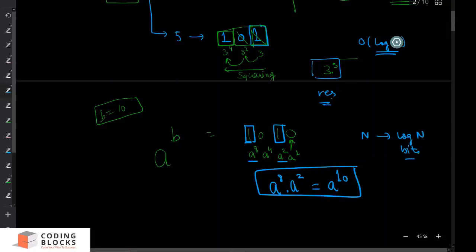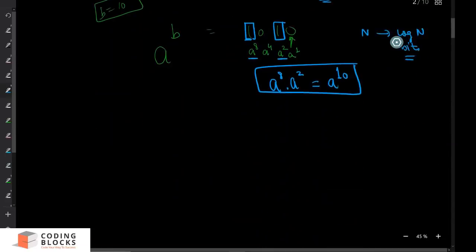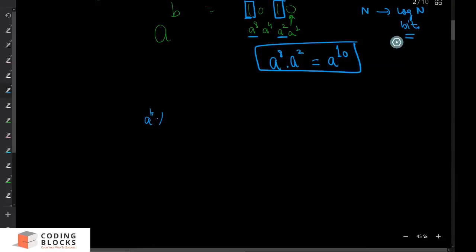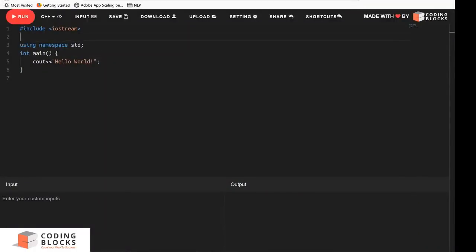What we do is iterate over b, extract bits one at a time, and if a particular bit is 1, we multiply the current value of a into our result. The result starts at 1. To compute a raised to the power b mod m, we apply stepwise mod: at every step where we update result or update a, we take mod m. This uses the modular multiplication property.